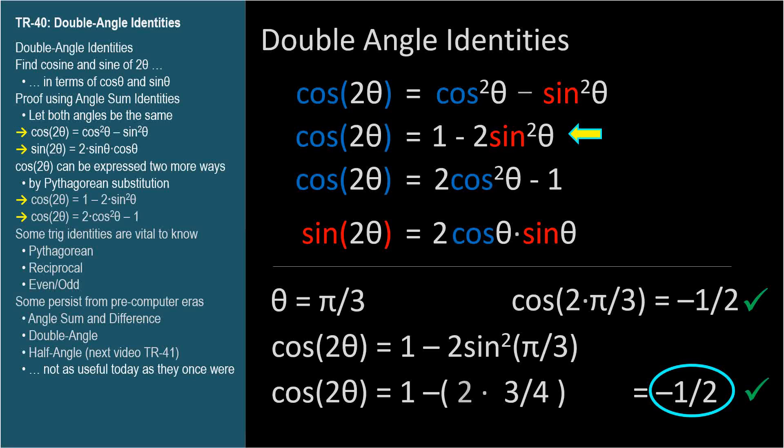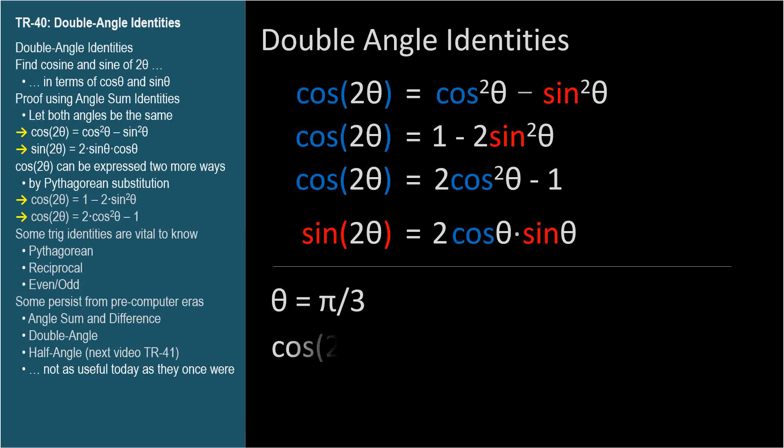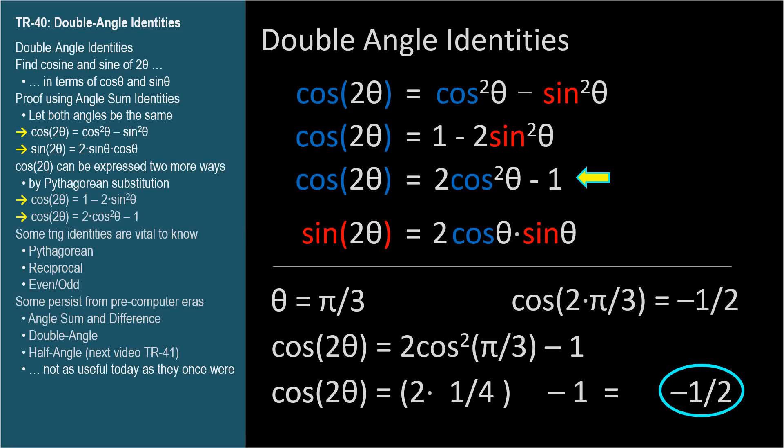The last version is 2 cosine squared θ minus 1. Cosine π over 3 is 1 half. Squaring that is 1 fourth. 2 times 1 fourth is 1 half. 1 half minus 1 is negative 1 half.